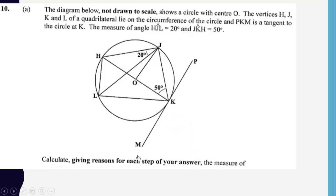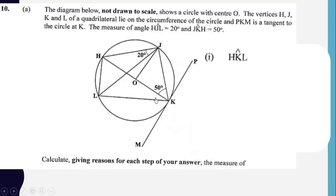We are supposed to calculate, giving reasons for each step, the measure of angle HKL. This angle is created by arc HL. The same arc creates an angle in the same segment as HKL, hence angle HKL should be equal to 20 degrees. The reason is that angles in the same segment are equal.